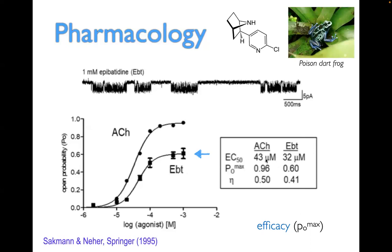A second quantity is the EC50 — the concentration of the ligand corresponding to 50% of the maximum response. From the sigmoidal function, the concentration at the inflection point corresponds to the EC50. If we measure the EC50 for acetylcholine and epibatidine, acetylcholine is 43 micromolar and epibatidine is 32 micromolar. So epibatidine is actually more potent than acetylcholine because at a lower concentration it reaches half of the maximum response. That's a pharmacological attribute we call potency. When you want to design modulatory compounds for these receptors, you would like to have potent compounds — able to activate the receptor at very low concentration — and also efficacious compounds.